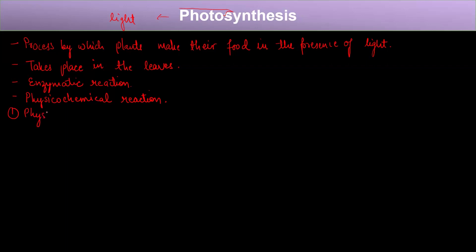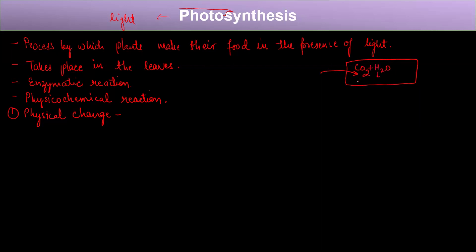What physical and chemical changes take place in photosynthesis? The physical change involves the exchange of gases. CO2 is taken inside the leaf cell, and in the presence of water, the leaf synthesizes glucose. The byproduct is O2, which is transported outside. So the physical change here is the exchange of CO2 and oxygen.